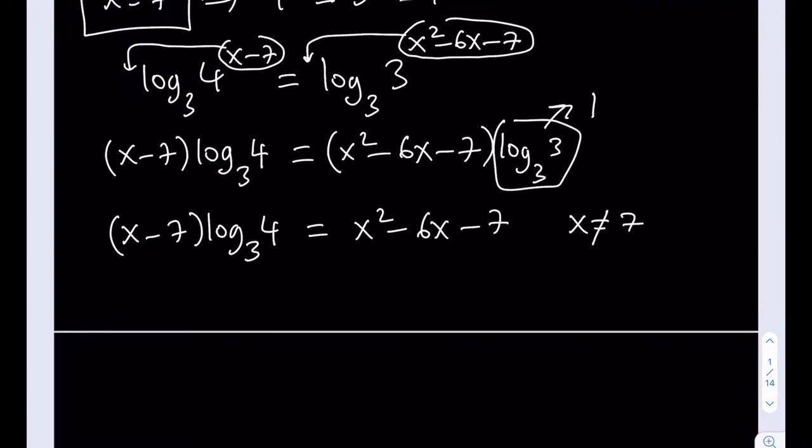All right. So if x does not equal 7, I'm able to divide, and that's going to give me log 4 with base 3 is equal to x squared minus 6x minus 7 divided by x minus 7.